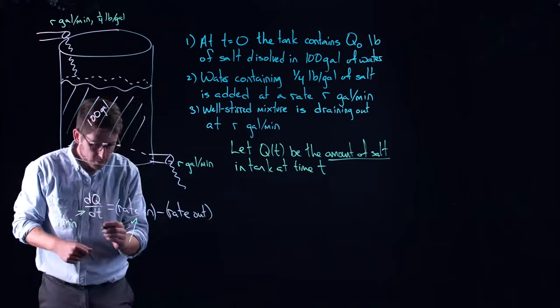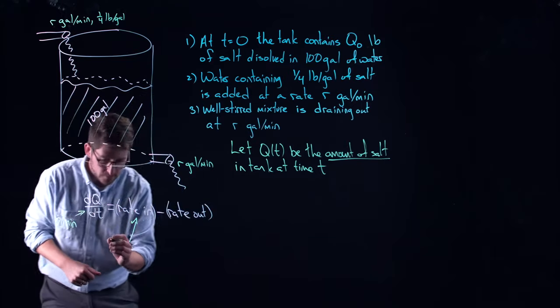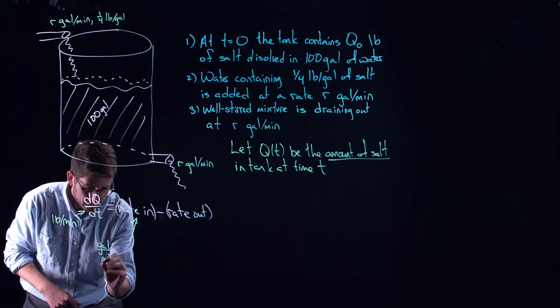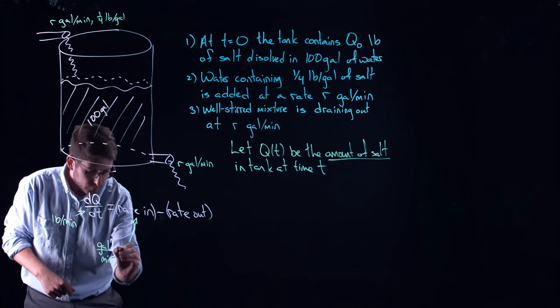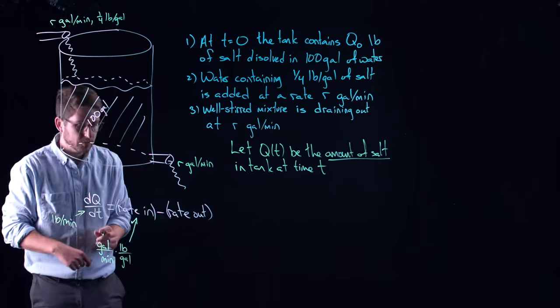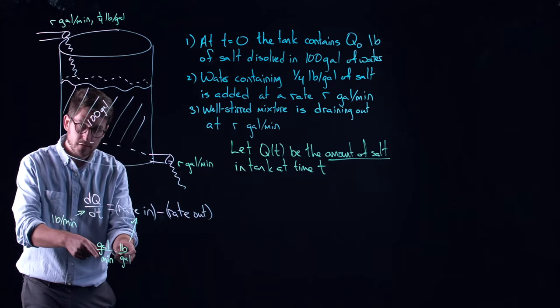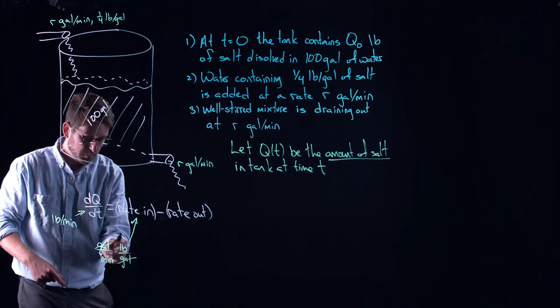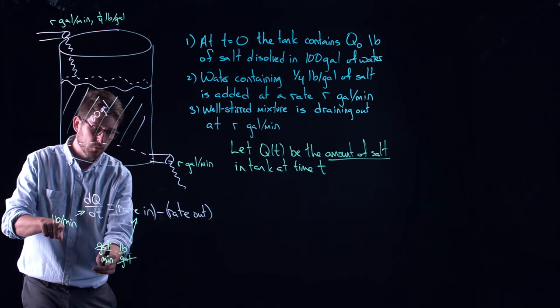So what is the amount of salt that's coming in per minute? Well, let me just do, let's look at the units first just to analyze these fractions. So we have gallons per minute coming in. And we have pounds per gallon of salt. That tells us that when we multiply these two things together, these things in these units, we get pounds per minute.